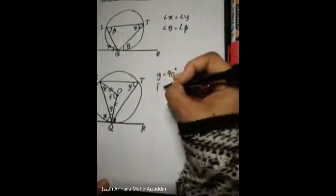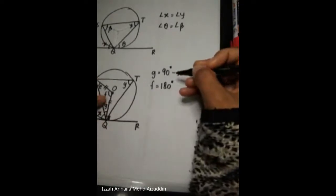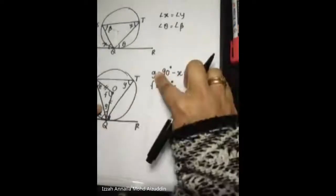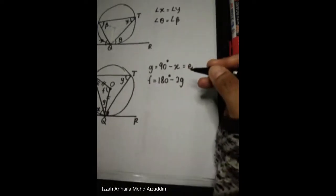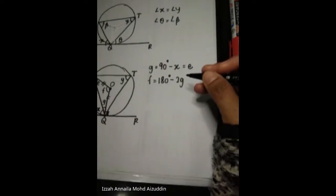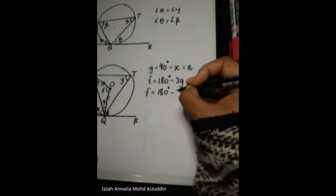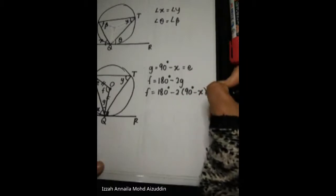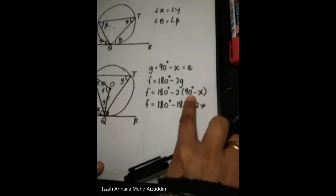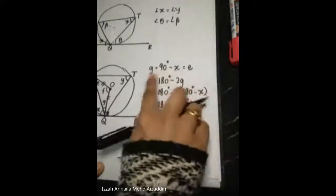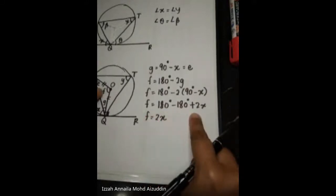How to get F? F equals 180 minus 2G, because this is one triangle, and E equals G — so here G and here also G, giving minus 2G. Now, G is equal to 90 minus X. So F equals 180 minus 2(90 minus X), which gives F equals 180 minus 180 plus 2X. So F equals 2X.